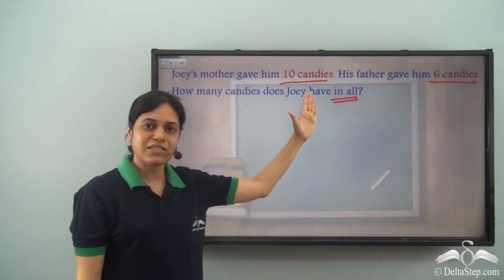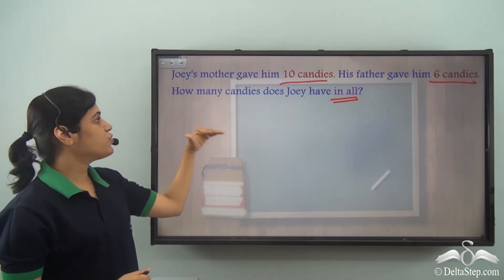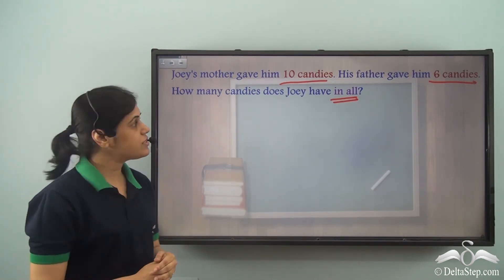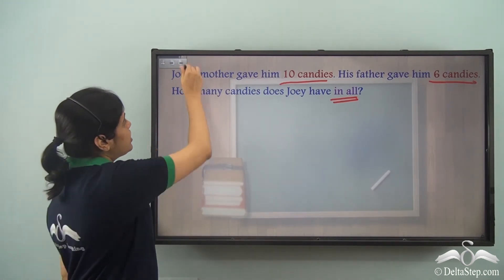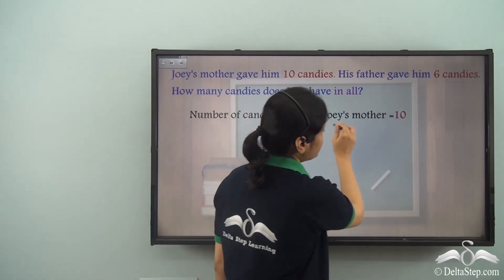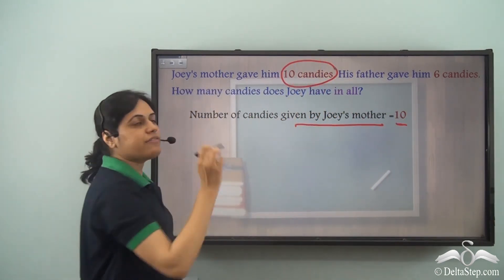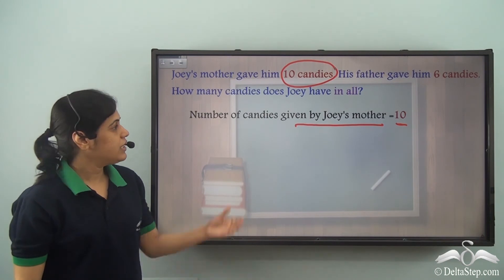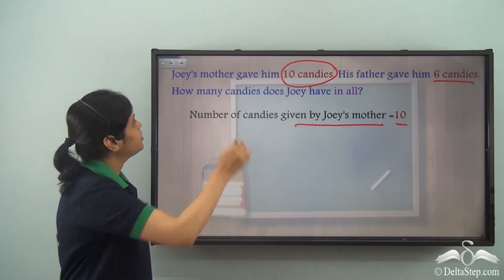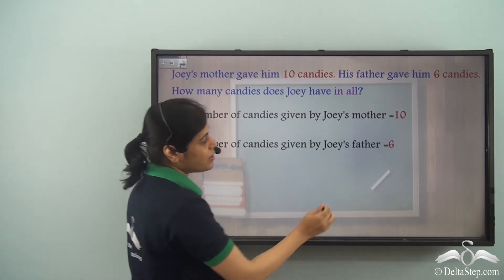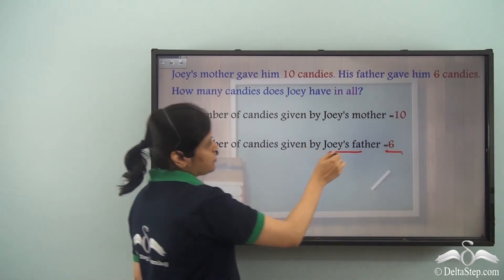In this case, in all means I need to add the two amounts together — that is, I need to add 10 candies with 6 candies. But before that I need to write what is given. What is given? Joey's mother gave him 10 candies — so the number of candies given by Joey's mother is equal to 10. Next, what is given? His father gave him 6 candies — so the number of candies given by Joey's father is equal to 6.